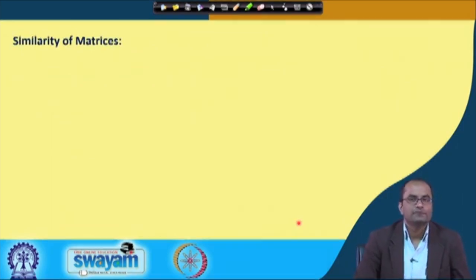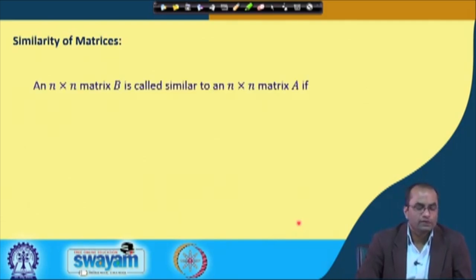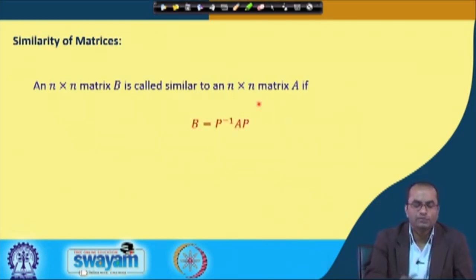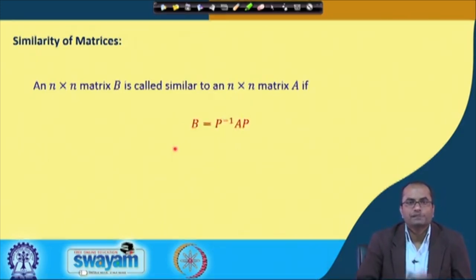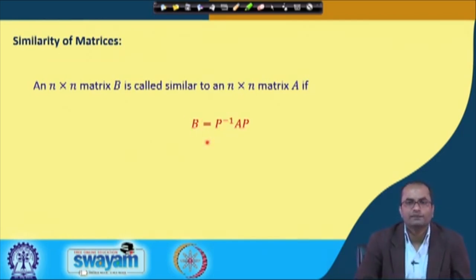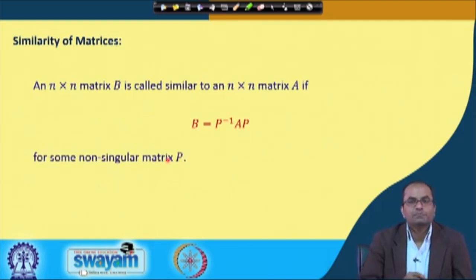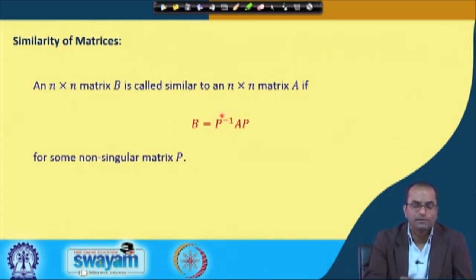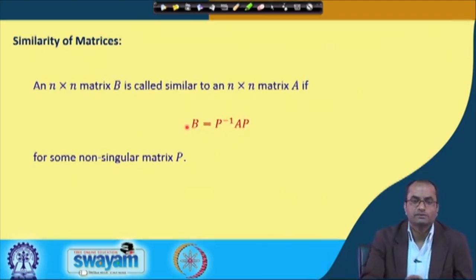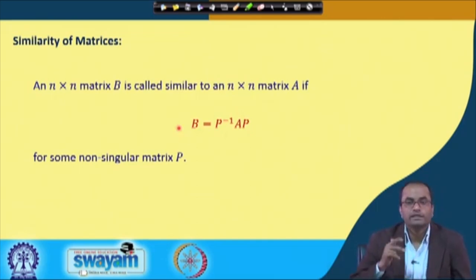Now we introduce the concept of similarity of matrices. An n×n matrix B is called similar to an n×n matrix A if B = P⁻¹AP for some non-singular matrix P. If this relation holds between A and B, we say B is similar to A, or equivalently A is similar to B.